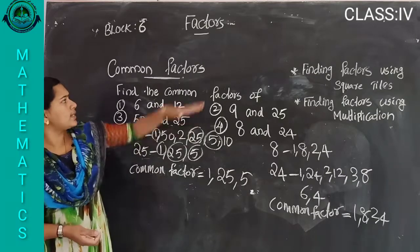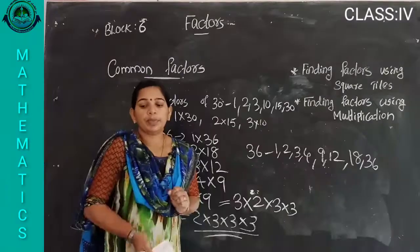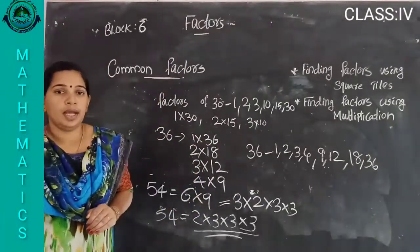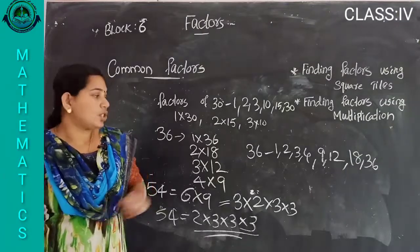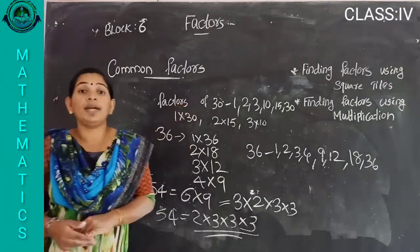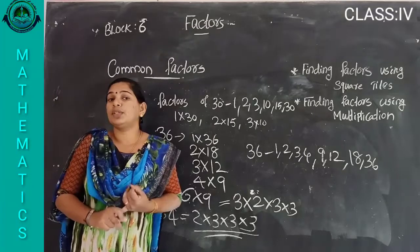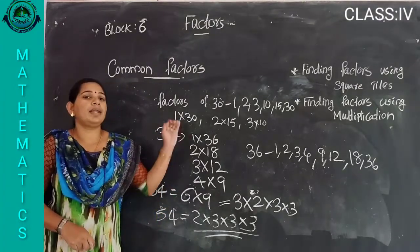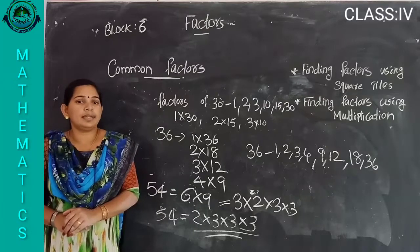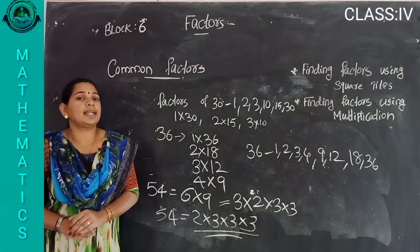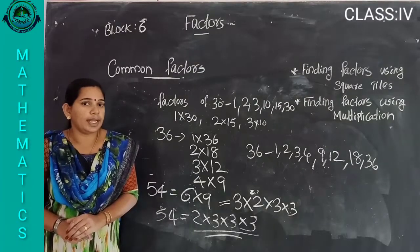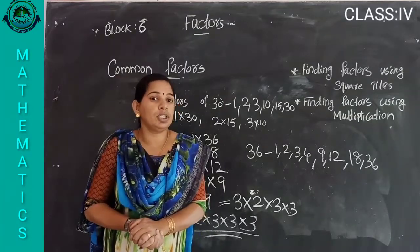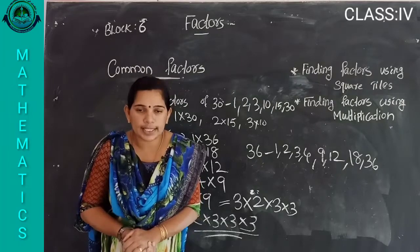I hope all of you understand how to find the common factor. Today we discussed how to find common factors: first write all the factors of the given numbers, then compare the two sets of factors, and the numbers that appear in both are the common factors. Do all problems from your textbook and workbook and send them to me. Have a nice day. Thank you.